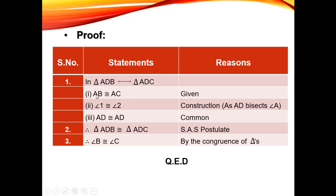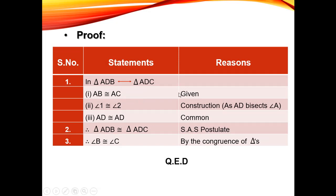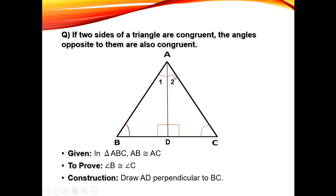First, AB is congruent to AC — this was given, because the question states the two sides are the same. Second, angle 1 is congruent to angle 2. Why? Because AD bisects angle A by construction — making angle 1 and angle 2 equal halves, both 30 degrees if angle A is 60.